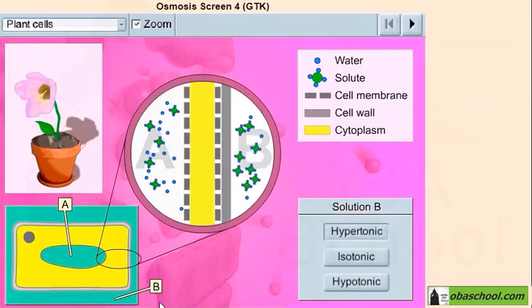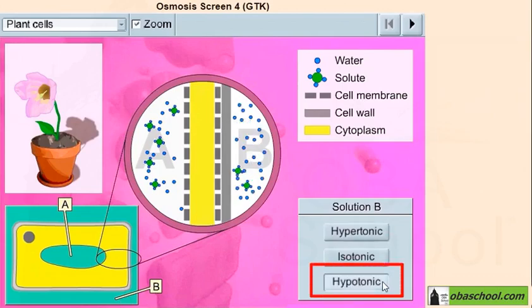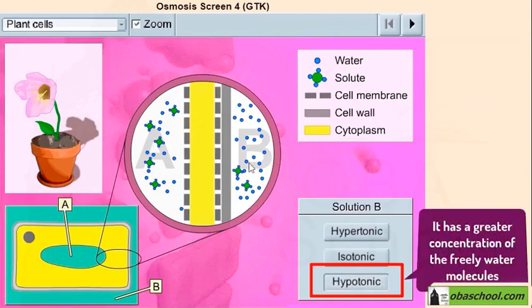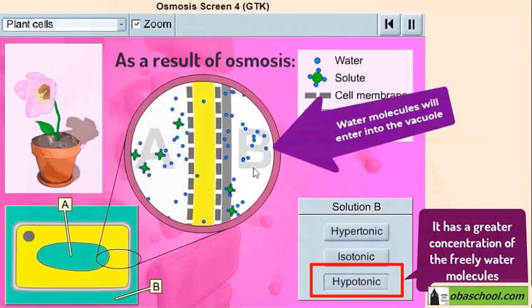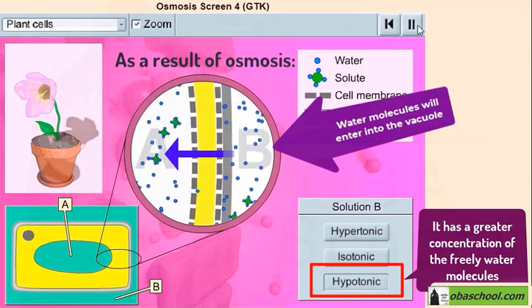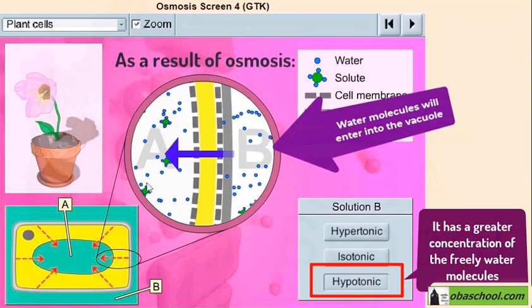However, if solution B was hypotonic, it will have a greater concentration of the free water molecules. So as a result of osmosis, water molecules will enter into the vacuole.